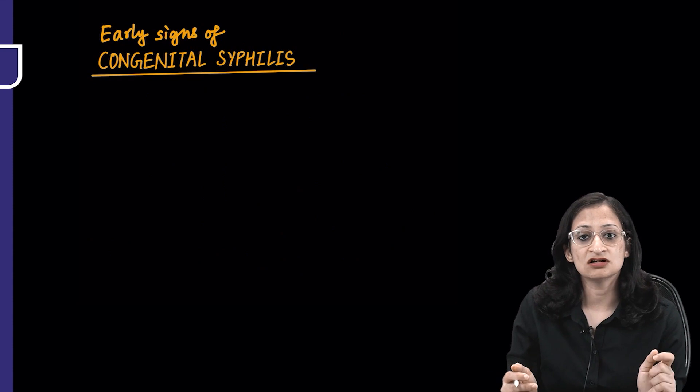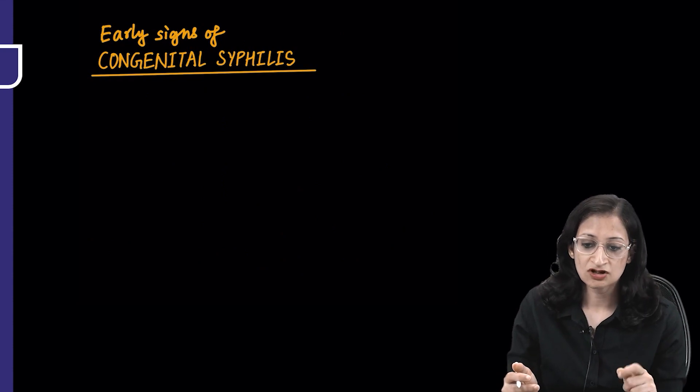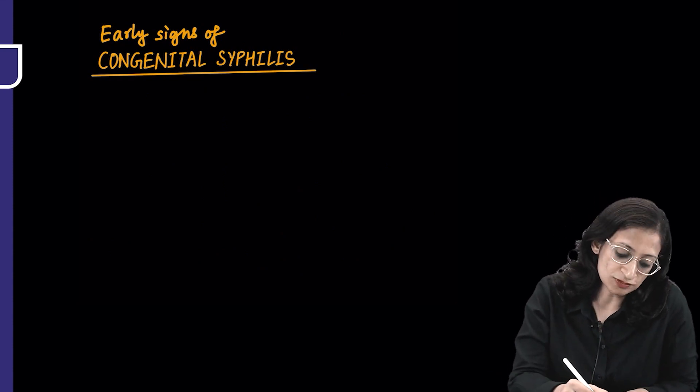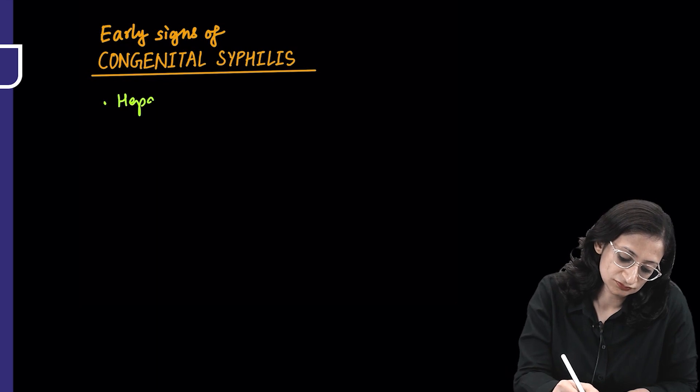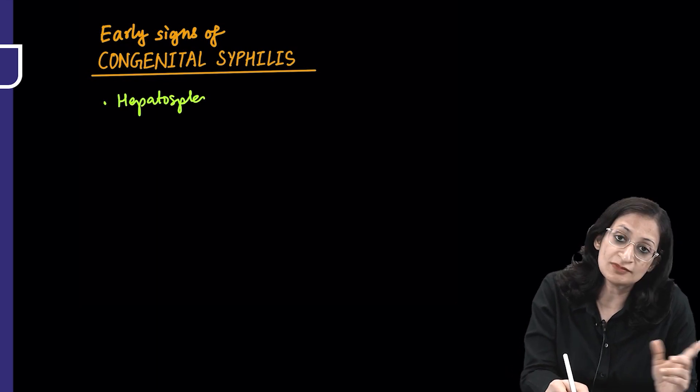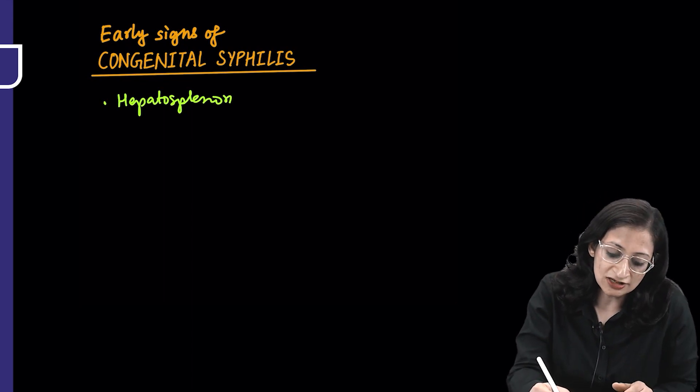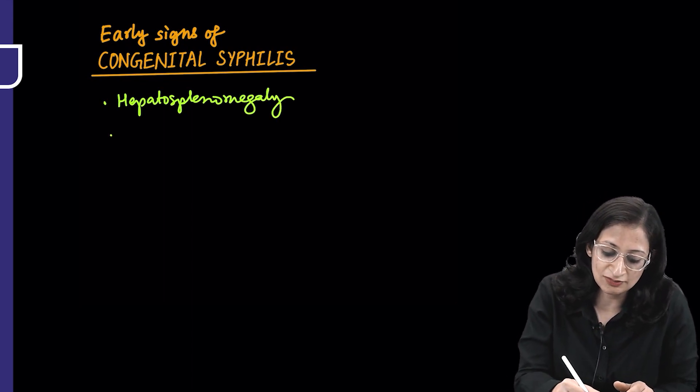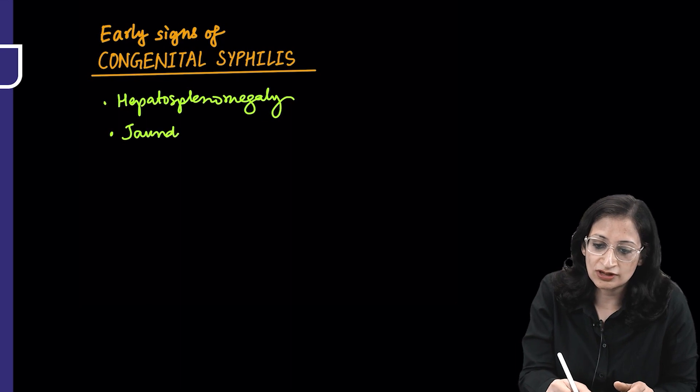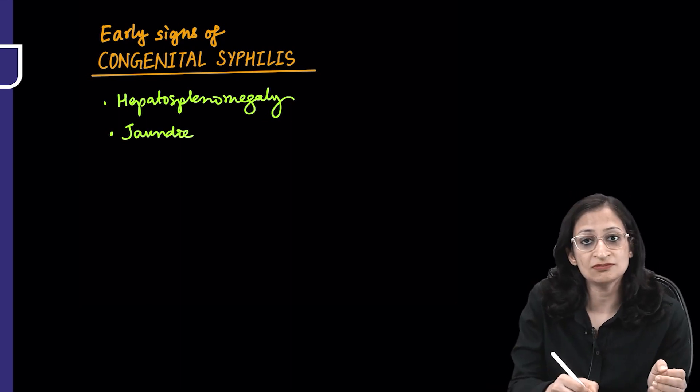There are some early signs of congenital syphilis which include hepatosplenomegaly, apart from the ones already mentioned like stillbirth, abortions, and low birth weight. They can have hepatosplenomegaly, jaundice, and diffuse lymphadenopathy.